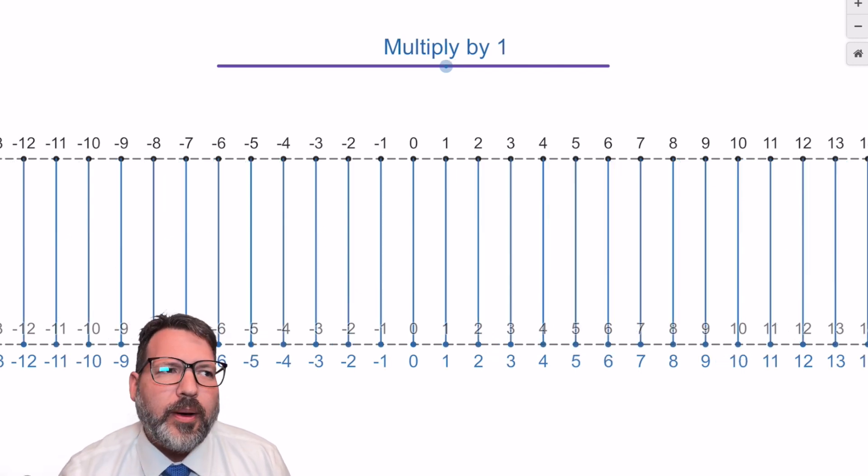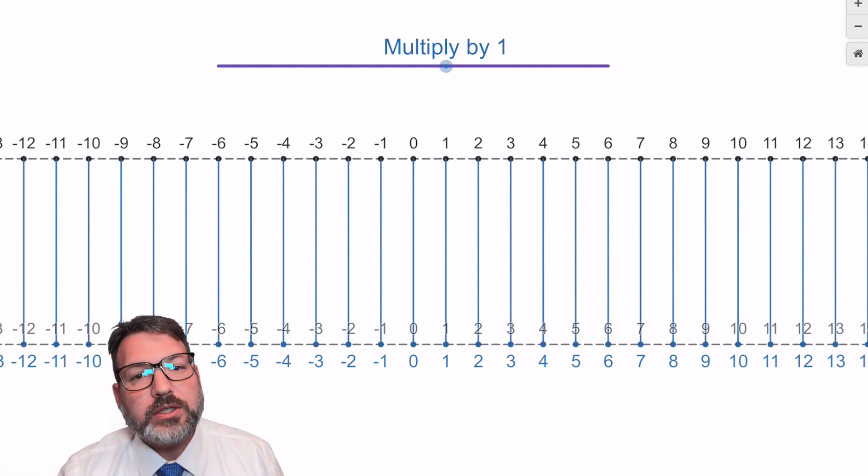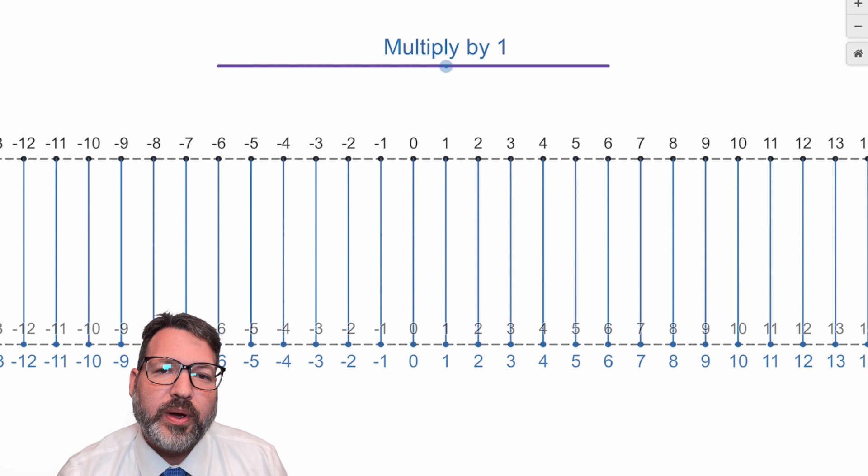So again, my preferred method for thinking about multiplication is not to think of it in terms of repeated addition, although certainly for integers, multiplication will give the same answer as repeated addition. Instead, there are so many more things we can do with multiplication and so many better ways to understand it, particularly trying to understand things like why would one negative number times another negative number actually return a positive product. That's really strange.